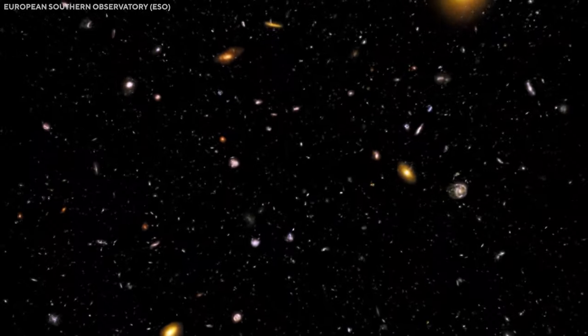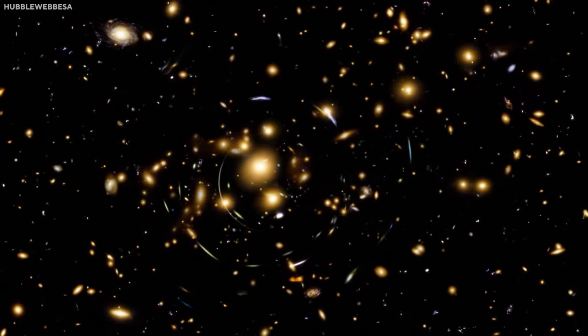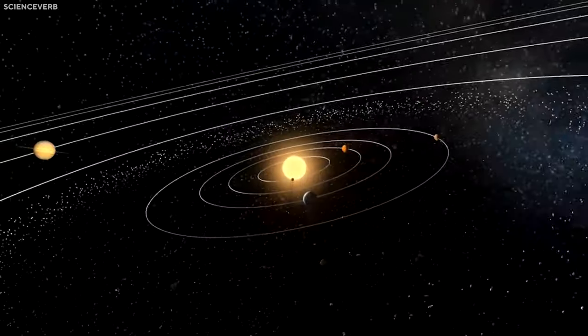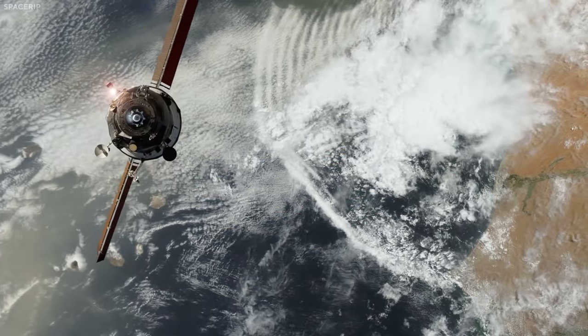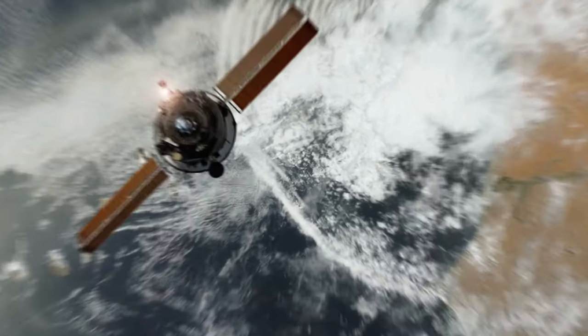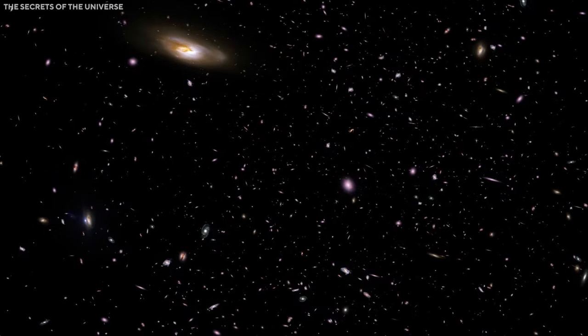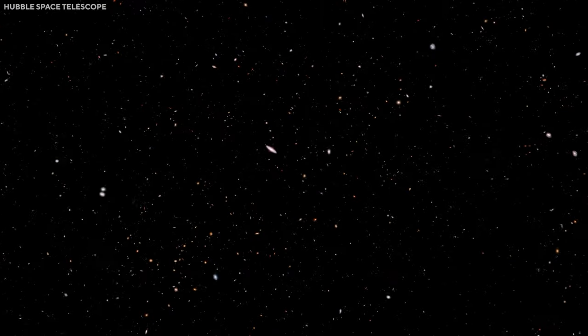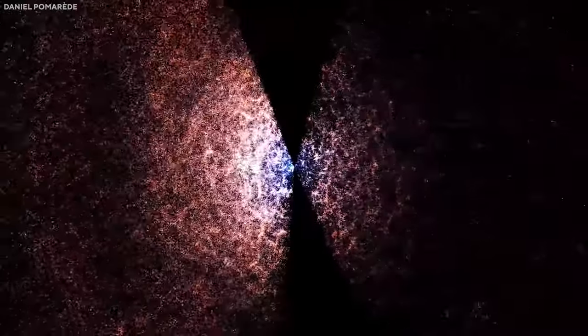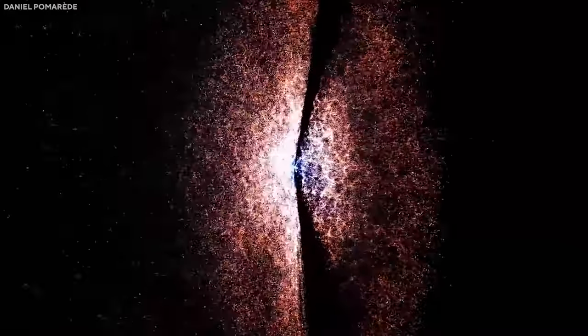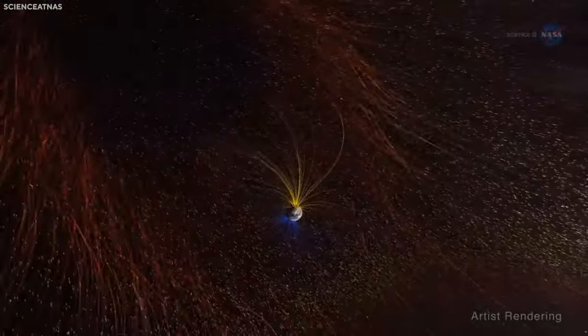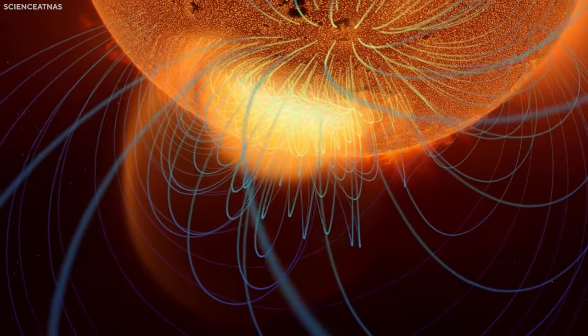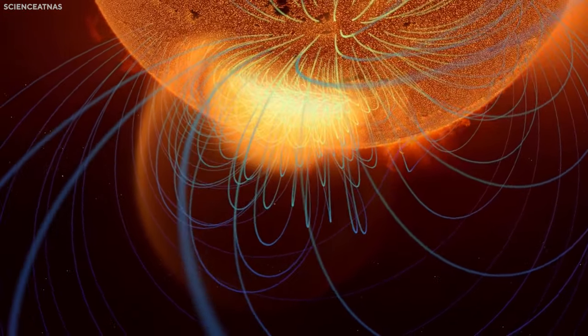The impact of such a dazzling spectacle on other life forms in the universe is also a topic of interest. The supernova could significantly affect nearby planets if extraterrestrial life exists in other systems. Planets near the exploding star could experience drastic climate changes due to shifts in light and energy, disrupting the habitats of nocturnal species. Without protective measures like a robust magnetic field or dense atmosphere, the radiation emitted by the explosion could reshape ecosystems and alter the course of evolution in affected areas.